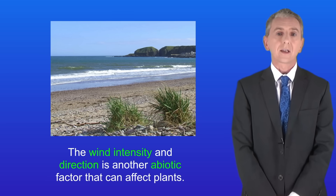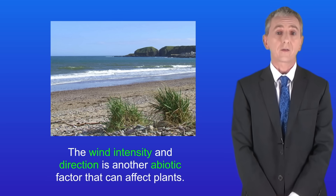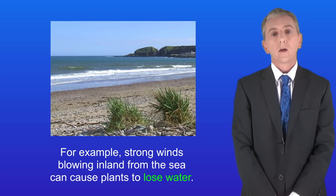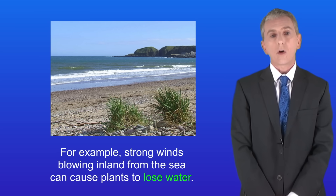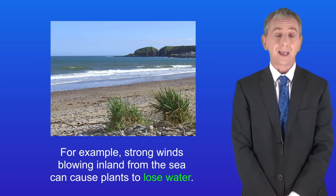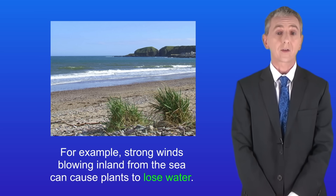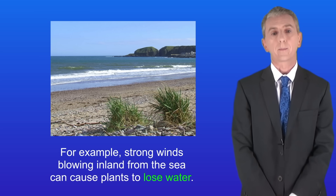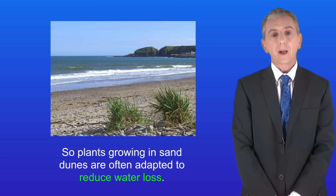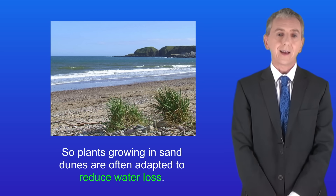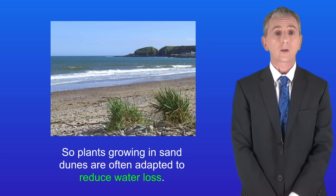The wind intensity and direction is another abiotic factor that can affect plants. For example, strong winds blowing inland from the sea can cause plants to lose water, so plants growing in sand dunes are often adapted to reduce water loss.